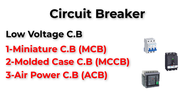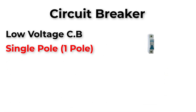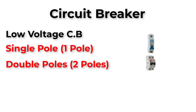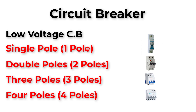We choose between those three categories depending on current ratings. A circuit breaker could be a single pole, two poles, three poles, or four poles, depending on the circuit we need to protect.